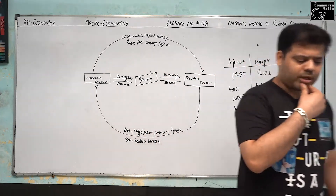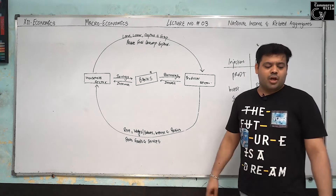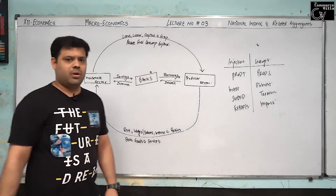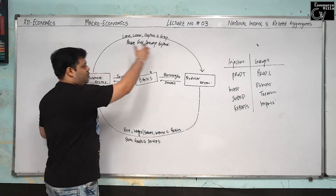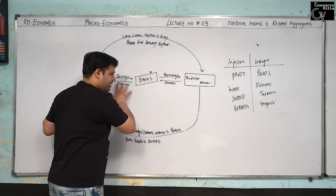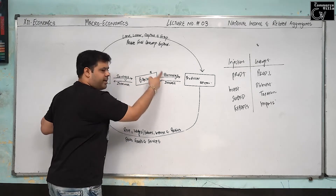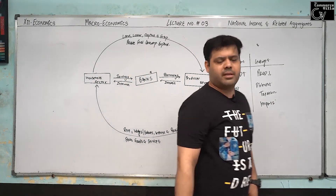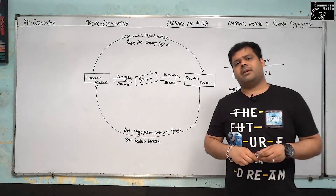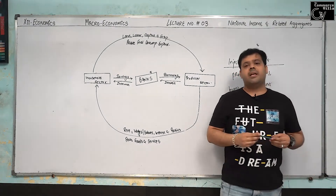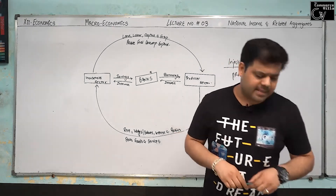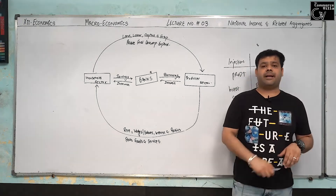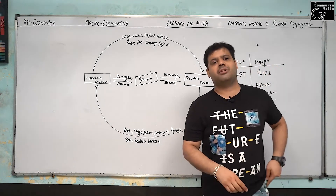Number 3: knowledge of interdependence of different sectors in an economy and their role — how dependent one sector is on another and how important it is. So the importance of studying the circular flow: it helps to determine national income and domestic income, it helps to determine leakages and injections, and it gives us knowledge of the interdependence of different sectors of an economy on each other.